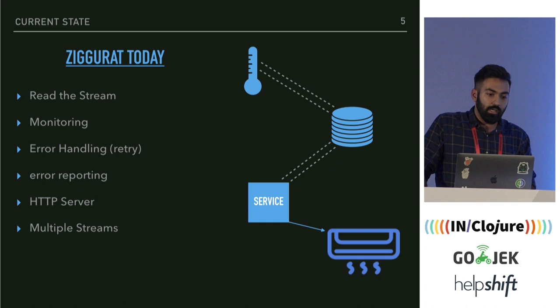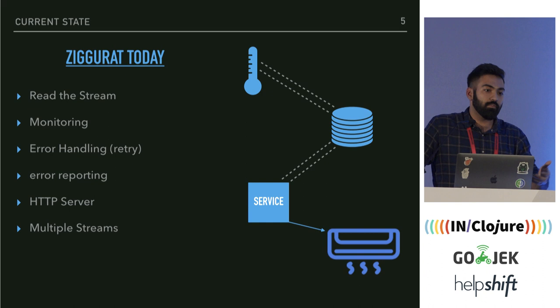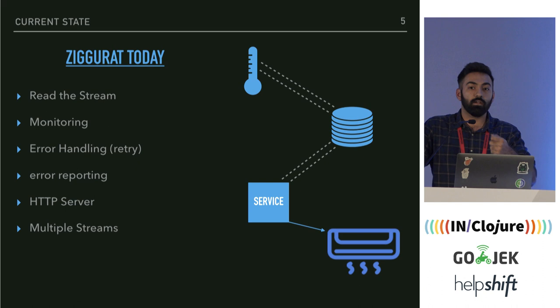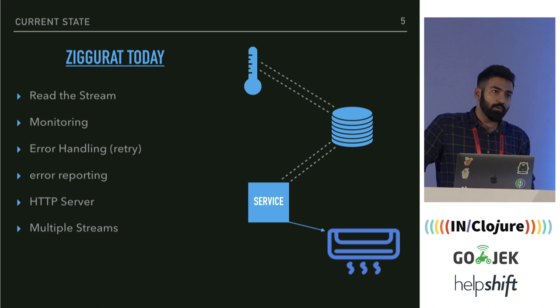In an ideal condition, it works fine. But we need to handle error cases. Let's say the API call fails — you don't want to sit in the heat or cold for a long time. So you need some error handling where, if the API call fails, you retry that message so you can retry the API call to the AC. You also want to know why the API call failed in the first place, so you can fix the underlying problem.